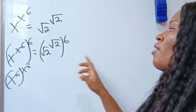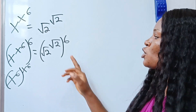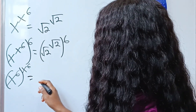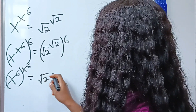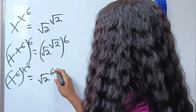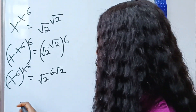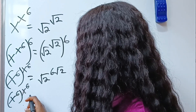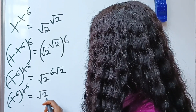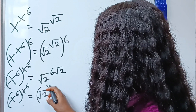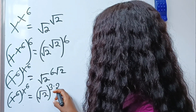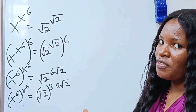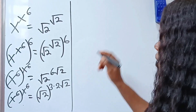Similarly, when you have two powers on a base, just multiply the two powers to get one power. So I can write the right side as square root of 2 raised to the power of 6 times root 2, which gives us 6 root 2. So we have x to the power of 6, raised to the power of x to the power of 6 times x, equal to square root of 2 raised to the power of 6 root 2. This can be written as 3 multiplied by 2 root 2, because 3 times 2 still gives us 6 — we've not changed anything.